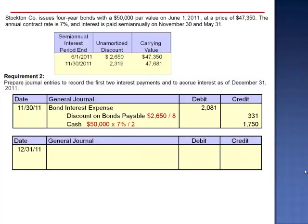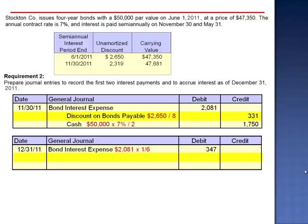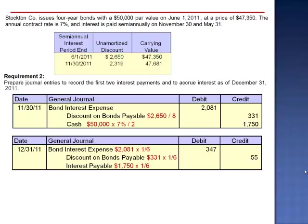On December 31, we need to accrue the interest. Basically, what we're going to do is take one-sixth of the November 30 journal entry. Debit bond interest expense for one month, one-sixth of $2,081, which is $347. We're going to increase the liability by one month by crediting discount on bonds payable for $331 divided by 6, which is $55. And the only difference is we're not going to credit cash on December 31 because our payment dates are November 30 and May 31. We're going to accrue the interest and credit interest payable for one-sixth of the semiannual payment, $292.